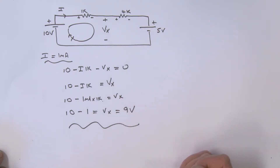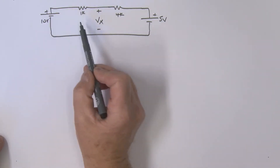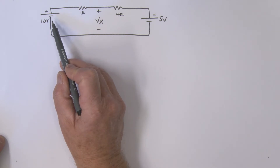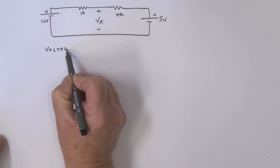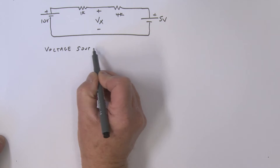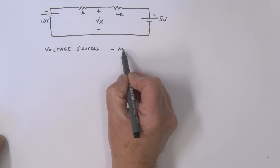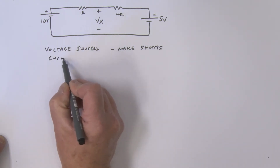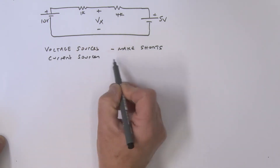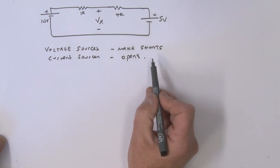Now let's look at the same problem using superposition. With superposition, we have one source acting at a time and zero all the other sources. For voltage sources, to zero them we make them shorts. For current sources, to zero them we make them opens.